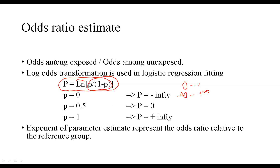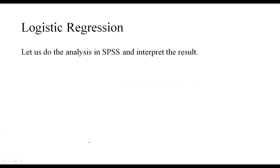We know that the odds ratio is the odds among exposed divided by the odds among unexposed with respect to an exposure. Due to this log-odds transformation in logistic regression, the exponent of the actual parameter estimate represents the odds ratio relative to the reference group. This reference group term is an important factor in interpreting the results of logistic regression. We will now move on to do a live example of fitting a logistic regression.